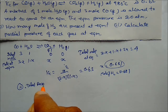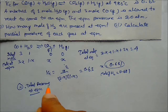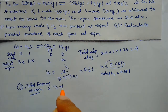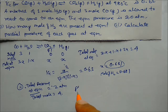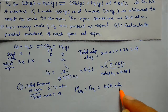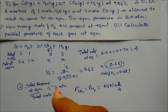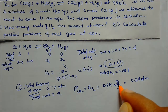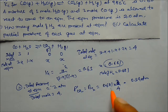Total pressure at equilibrium = 2 atm and total moles = 4. Partial pressure of CO₂ and H₂ = mole fraction × total pressure = (0.681/4) × 2 = 0.34 atm.